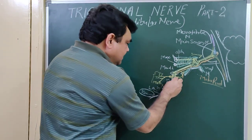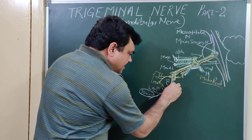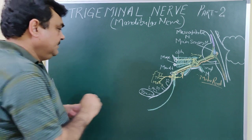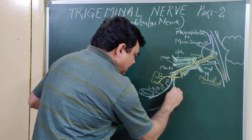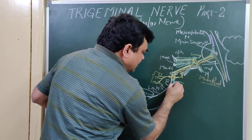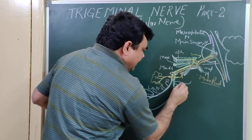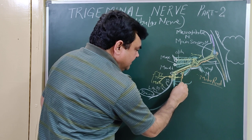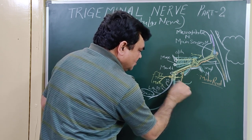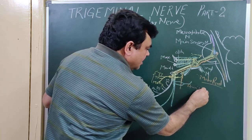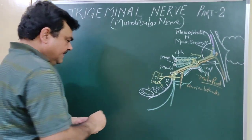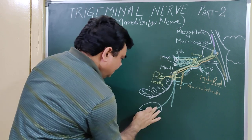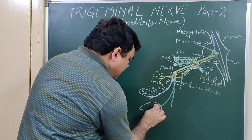The posterior division gives three branches: the lingual branch, the inferior alveolar branch, and the auriculotemporal branch. The auriculotemporal branch has two roots, and the middle meningeal artery passes between these two roots. The lingual branch gives supply to the anterior two-thirds of the tongue.